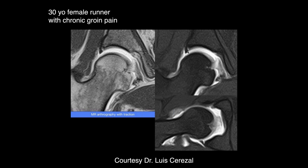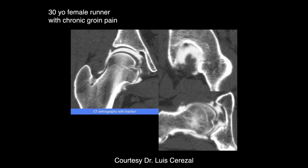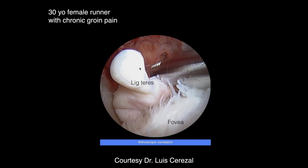There is a defect at the junction of the labrum and articular cartilage. When smooth like this, it is generally considered a congenital variant. On CT arthrogram in the same patient, contrast is seen going into the ligamentum teres through the ligament, confirming a partial tear.